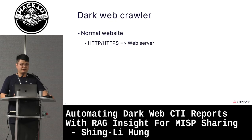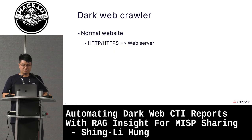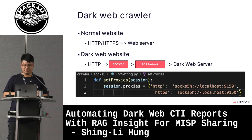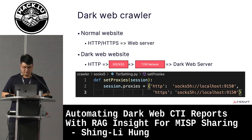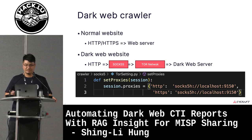To simplify the connection procedure: when we browse the surface web, we use HTTP or HTTPS to connect to a web server. On the dark web, the Tor browser uses the SOCKS5 protocol. To crawl data from the dark web, download the Tor browser and open it — it will determine which port to create based on your OS. On Mac, it creates port 9150. Then set up a proxy in your code to transform HTTP traffic to SOCKS5, and you can crawl any website. Each website may have anti-crawler mechanisms that you need to bypass individually.